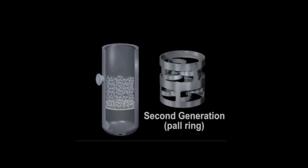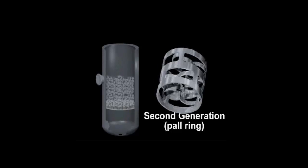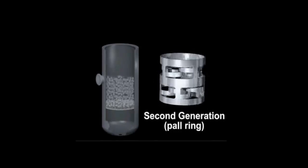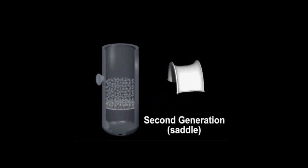Second generation developments in the 1960s moved to enhance the amount of surface area per volume of packing by including slots, holes, and fingers. Typical second generation packing are saddles and the pawl ring.